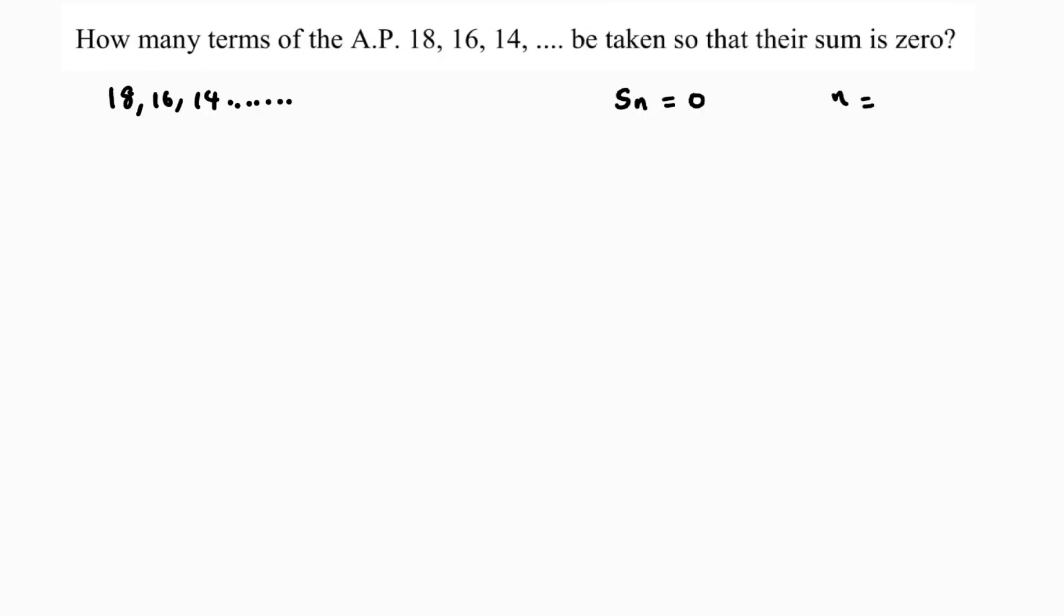For that, first I'll write what is A. A is 18. The common difference, that is A2 minus A1, is 16 minus 18, which is minus 2.